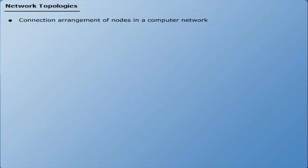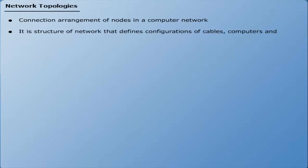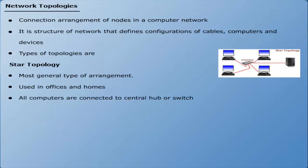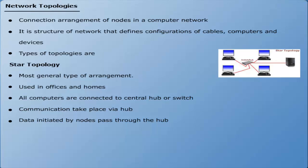Network topology is the connection arrangement of nodes in a computer network. It is the topological structure of a network that defines the configuration of cables, computers, and other peripherals. The major types of network topologies include star, ring, bus, and hybrid topologies. Star topology is the most general type of network arrangement used in offices and homes. In star topology, all computers are connected to a central hub or switch. Communications take place via the hub, which acts as a common connection device. All data initiated by nodes passes through the hub, and the hub forwards it to the destination node. The hub also manages and controls the whole network.